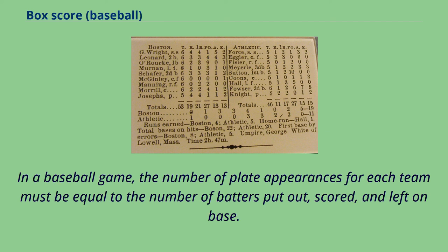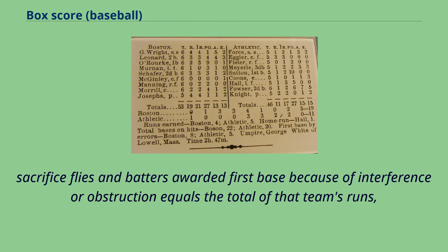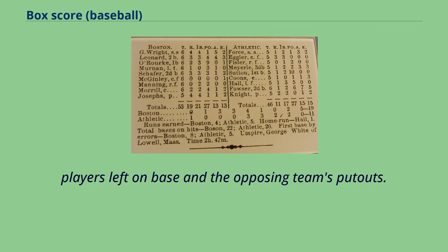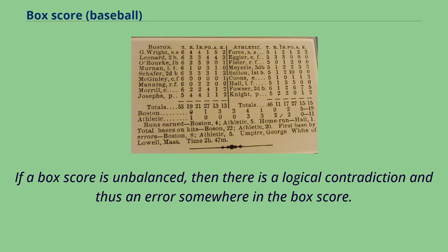In a baseball game, the number of plate appearances for each team must be equal to the number of batters put out, scored, and left on base. A box score is in balance when the total of the team's times at bat, bases on balls received, hit batters, sacrifice bunts, sacrifice flies, and batters awarded first base because of interference or obstruction equals the total of that team's runs, players left on base, and the opposing team's put outs. If a box score is unbalanced, then there is a logical contradiction and thus an error somewhere in the box score.